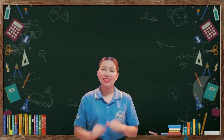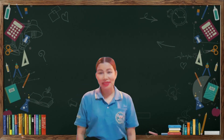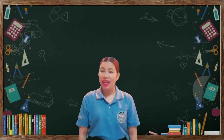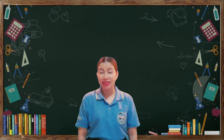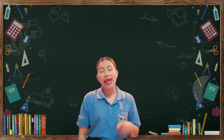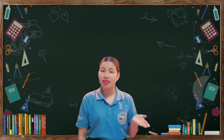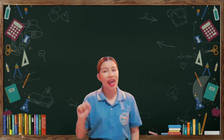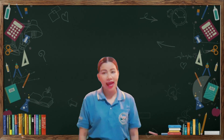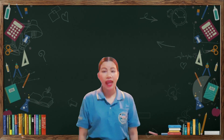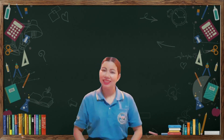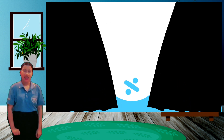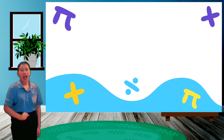Hi kids! It's me again, teacher Sheila. Our subject for today is mathematics and today we're going to review our past lessons. First, we have shapes and colors. Second, we have numbers 1 to 10. Third, we have addition up to 10, and the last one is big and small. Are you ready to learn? Okay kids, let's start our math review.